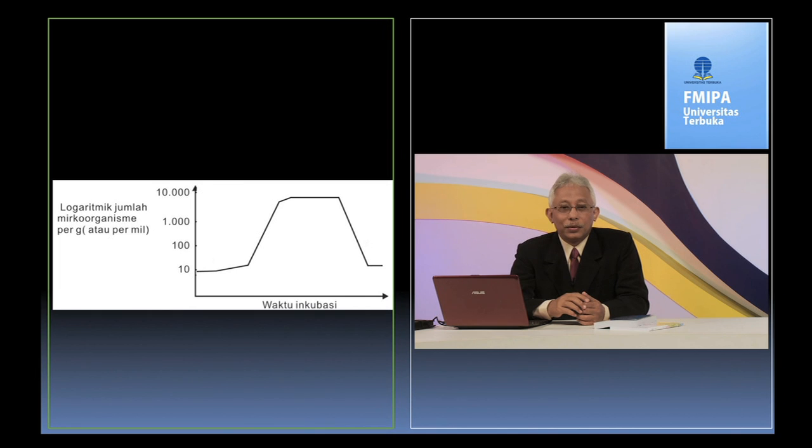Sekarang mari kita perhatikan pola pertumbuhan mikroorganisme. Ternyata, apabila mikroorganisme kita tumbuhkan dalam sistem tertutup dan pertumbuhan sel dihitung berdasarkan waktu, kemudian diplotkan dalam grafik, maka pertumbuhan sel bakteri biasanya mengikuti suatu pola pertumbuhan tertentu, yaitu berupa kurva pertumbuhan sigmoid. Kecepatan pertumbuhan dan kematian populasi mikroorganisme selalu bersifat eksponensial atau logaritmik.